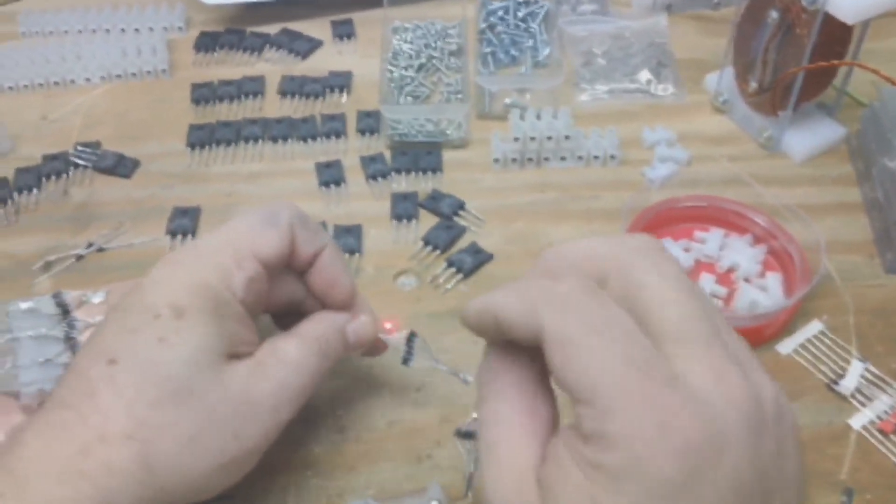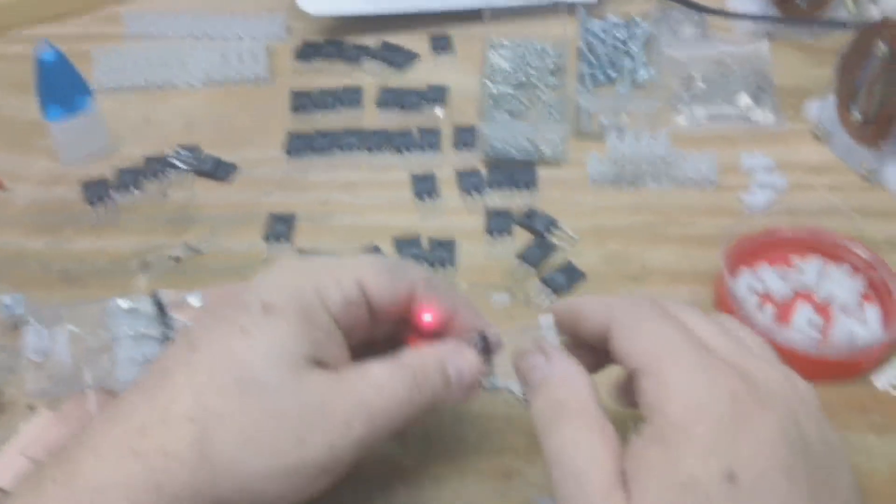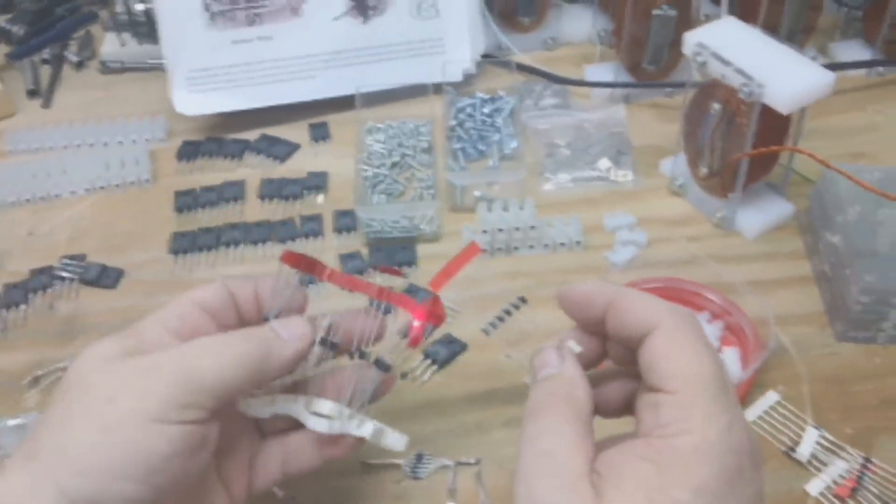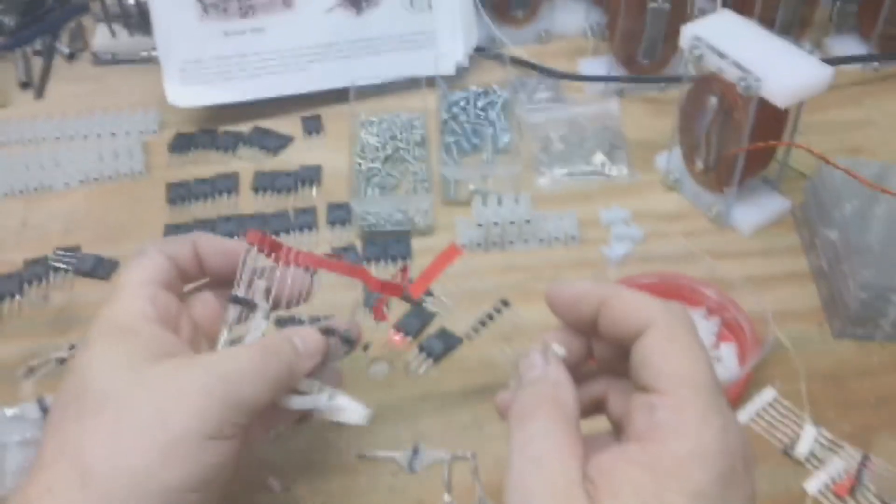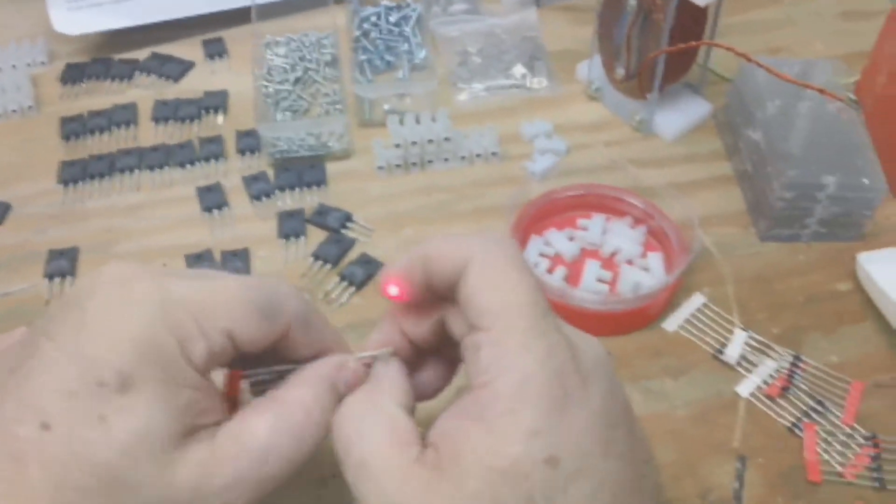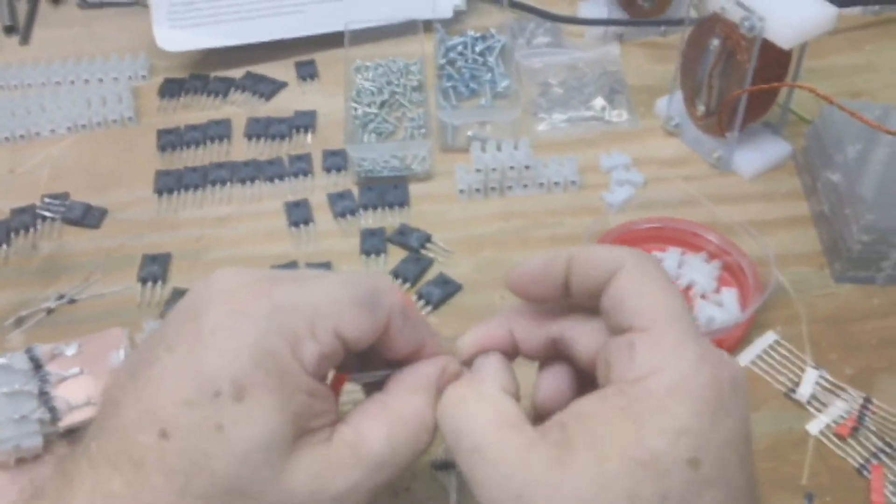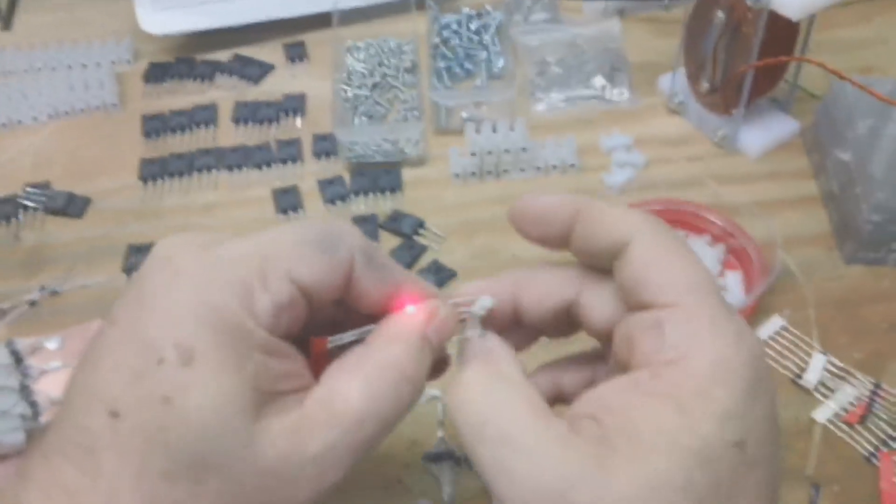So when you get your diodes, they usually come like this. It makes it a lot easier. I cut them into six each, so I'll peel the bottom off of it.